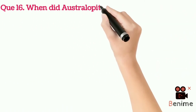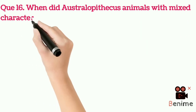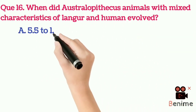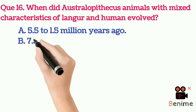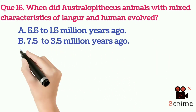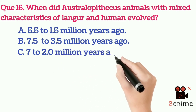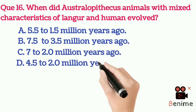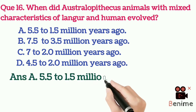Question 16: When did Australopithecus — animals with mixed characteristics of langur and human — evolve? A. 5.5 to 1.5 million years ago. B. 7.5 to 3.5 million years ago. C. 7 to 2.0 million years ago. D. 4.5 to 2.0 million years ago. Answer A: 5.5 to 1.5 million years ago.